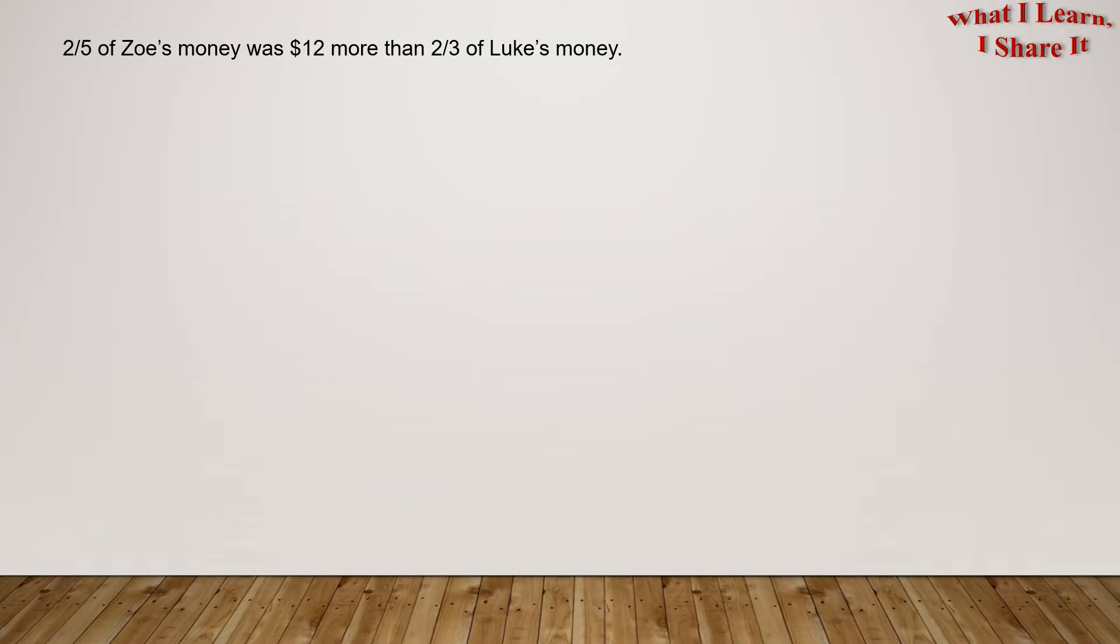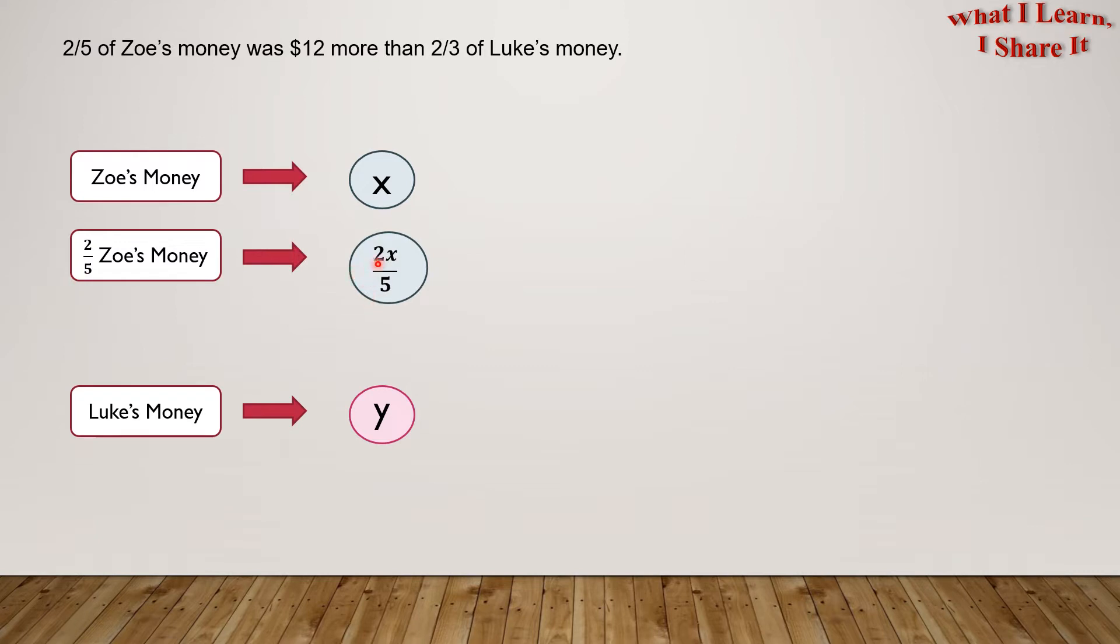Two-fifths of Zoe's money was $12 more than two-thirds of Luke's money. Let's represent Zoe's money by X and Luke's money by Y. We want two-fifths of Zoe's money, so two-fifths of Zoe's money will be equal to 2/5 of X. In the same way, we want two-thirds of Luke's money. Two-thirds of Luke's money will be equal to 2/3 of Y.